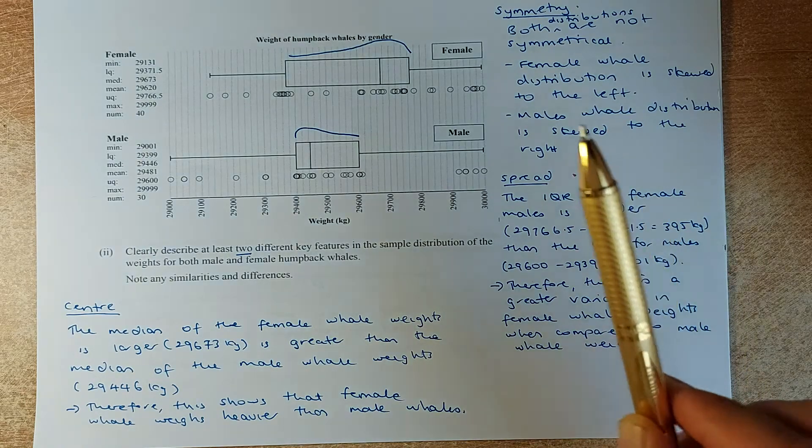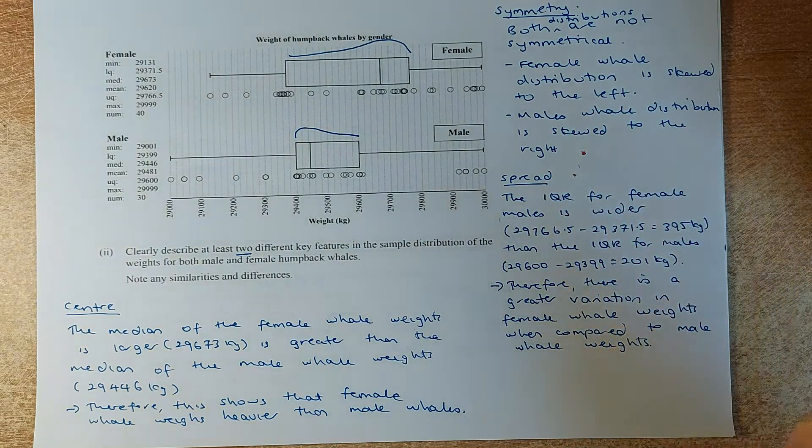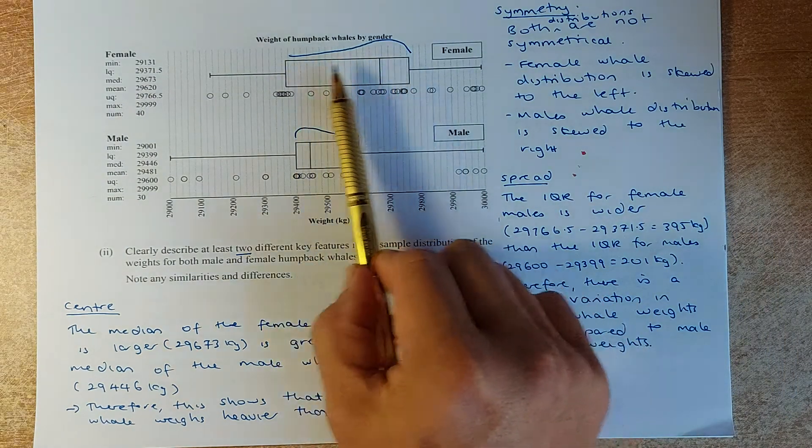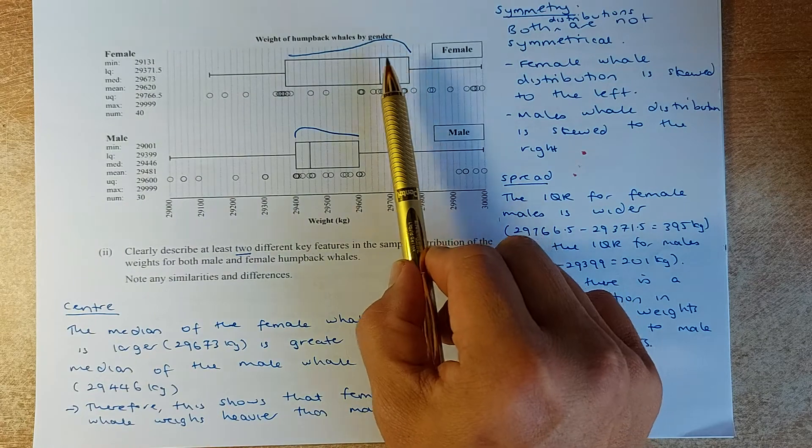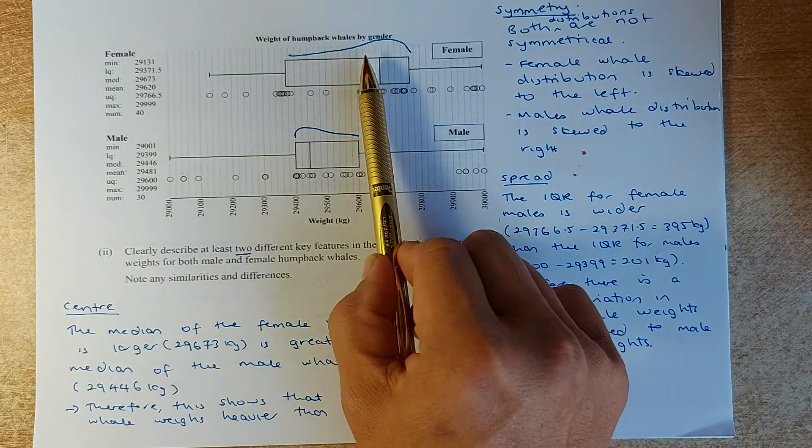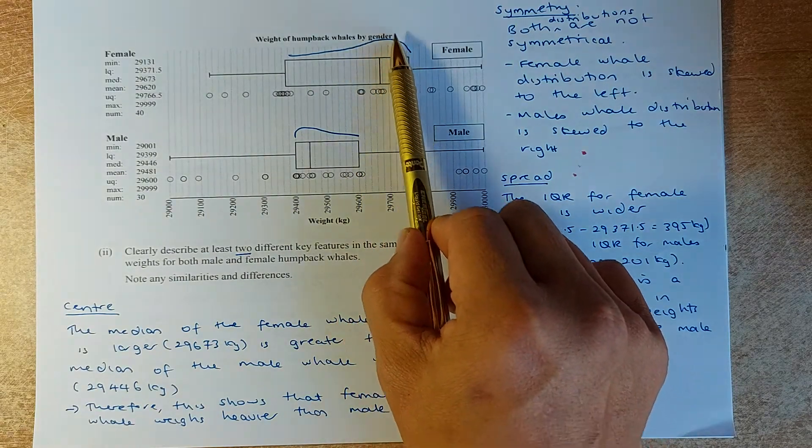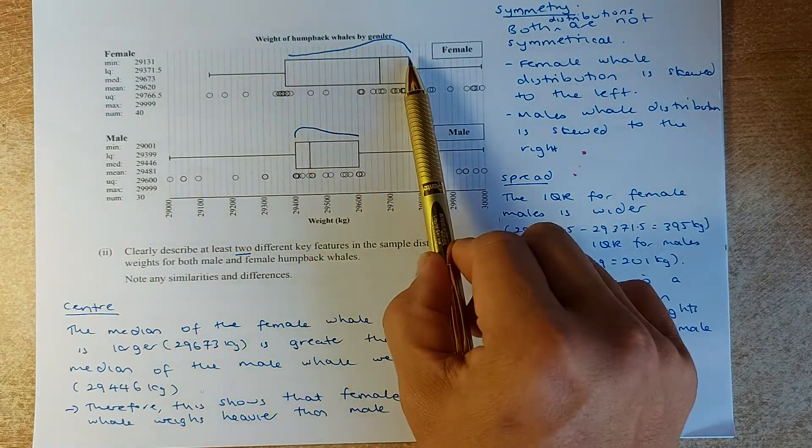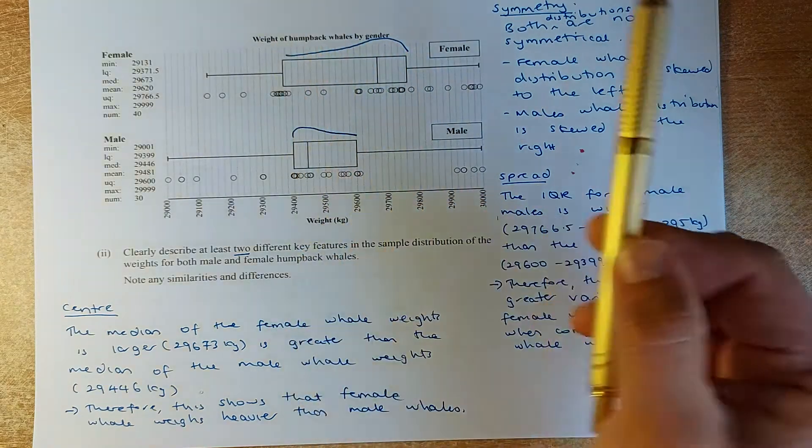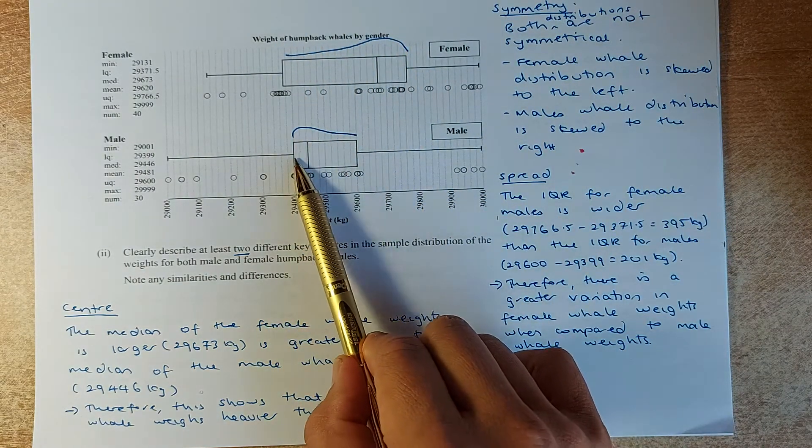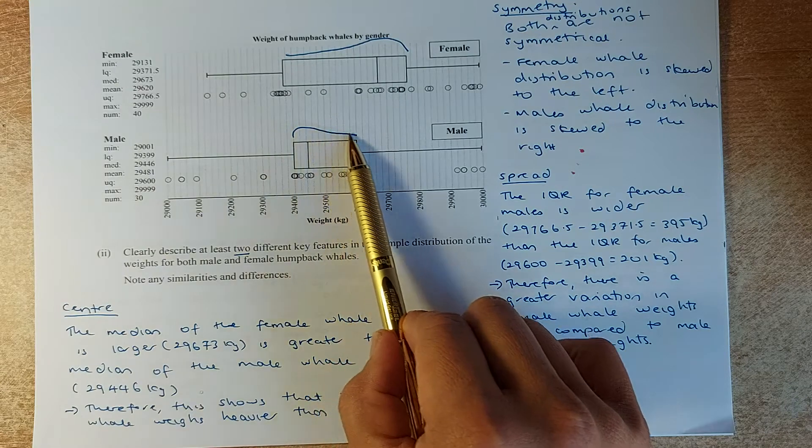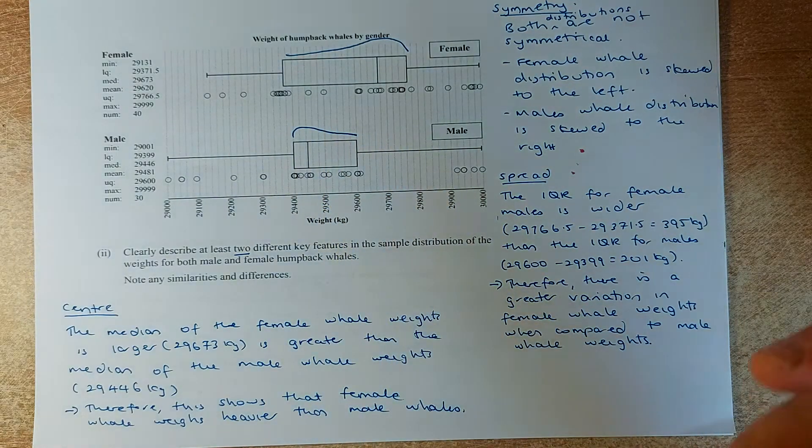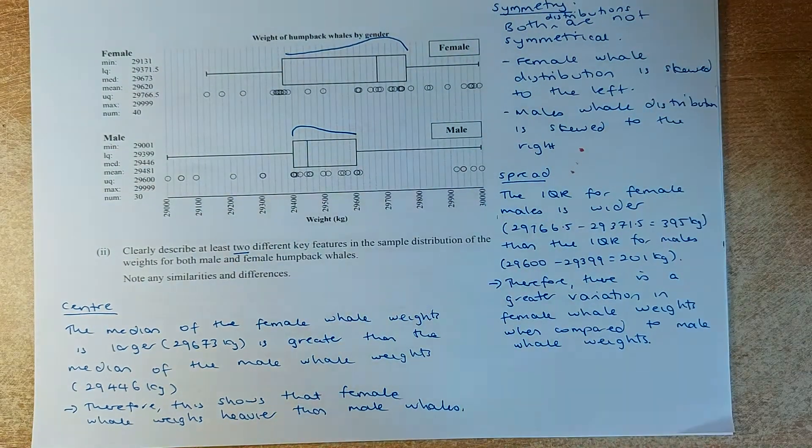The first thing we're going to talk about is the symmetry. Both of them are not symmetrical. If it's symmetrical, the median will lie in between the lower quartile and the upper quartile. In this case, it's more to the right. We can say the female distribution is skewed to the left because it falls on the left. Similarly, the male distribution is falling down on the right, so we say the distribution for male is skewed to the right. That will be your first point, your first achieve.